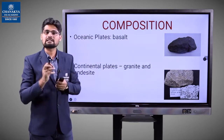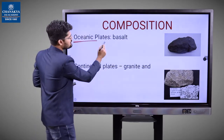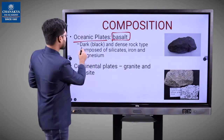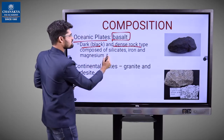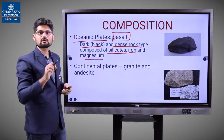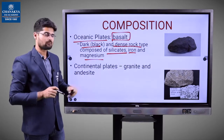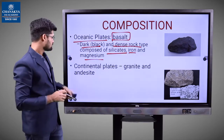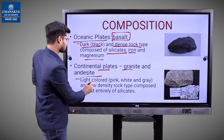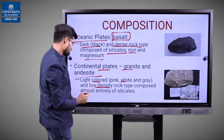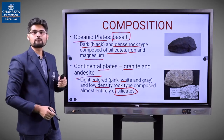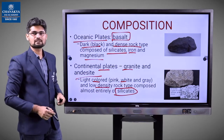Looking at the material composition: oceanic plates are basaltic in nature. Basalt is basically dark, black, and dense rock composed of silicates, iron, and magnesium. Continental plates are granitic and andesitic — light-colored, pink, white, and gray material, low-density rocks, with silicates as the maximum of their composition.